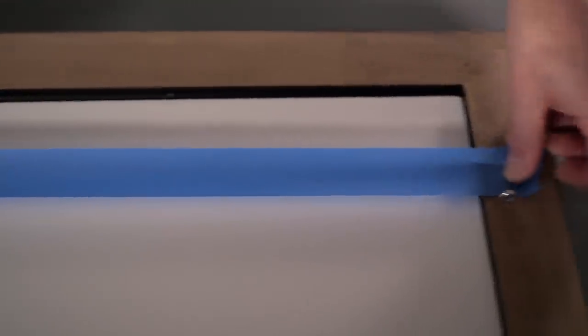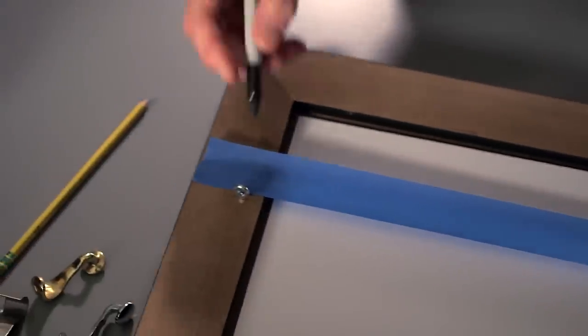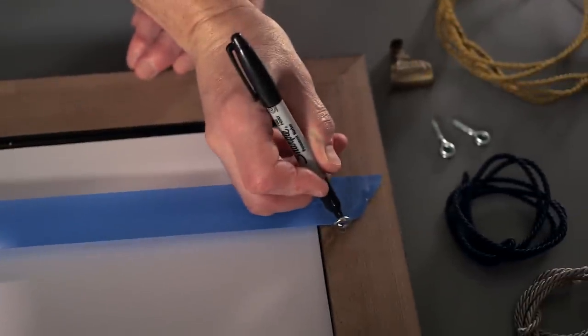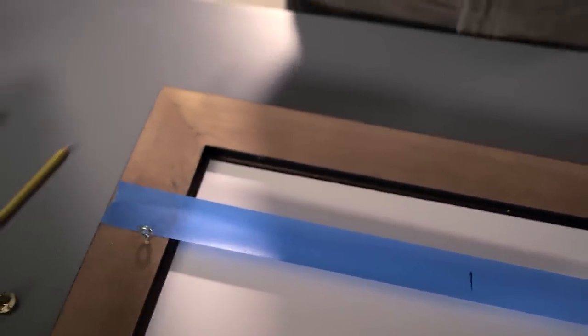Run tape across the back of the frame, just above the eyelet screws. Mark the position of the screws and also mark the center of the frame. Note how far the screws are from the top. In this case, six inches.